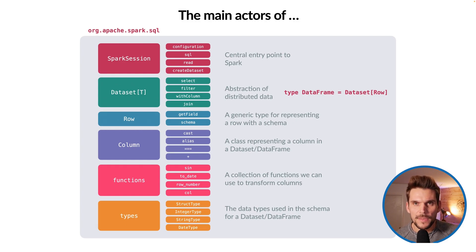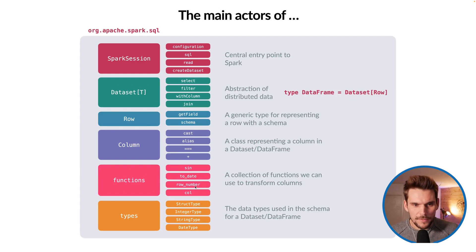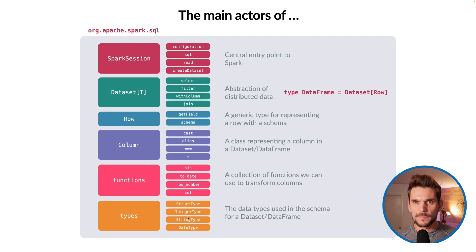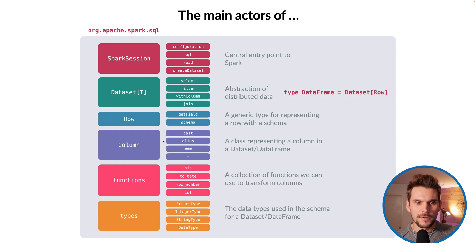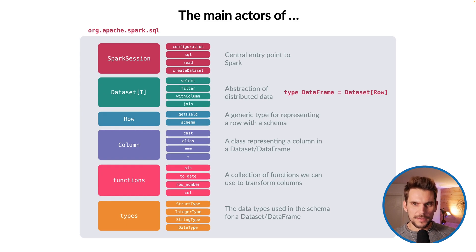Then we have the sql.functions object, which provides us with a wide variety of functions we can use together with DataFrames and Columns — hundreds of functions available for use in our programs. Finally, we have the data types, defined in org.apache.spark.sql.types. Within that package we can find, for example, StructType, IntegerType, StringType, DateType, and many more. These data types are used in the schema of a Row, Dataset, or DataFrame to specify the type of a particular column.